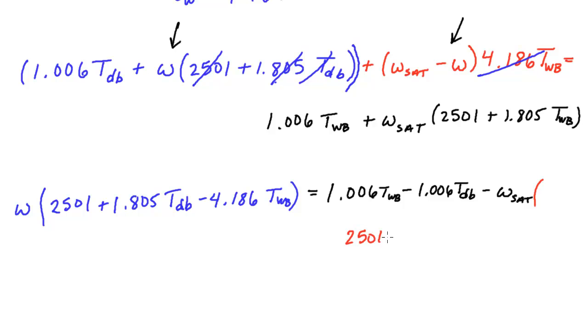I'm going to take this term and subtract it from both sides of the equation. We have 1.006 T wet bulb minus 1.006 T dry bulb. The only other thing we need to move to the other side is this saturation term which is positive here, so it needs to be negative on the other side. We can take out that value itself.